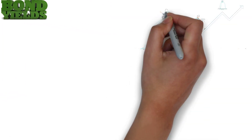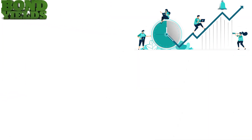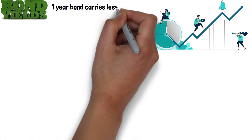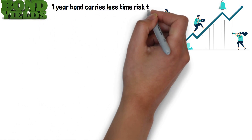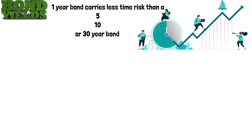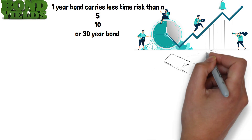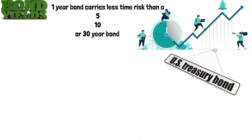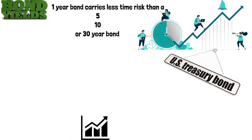Bond yields typically increase with duration. This is logical. A one-year bond carries less risk in the form of time than a 5, 10, or 30-year bond. For a given bond or instrument — US Treasury bonds is the most common example — a yield curve can be drawn with yield increasing with duration.